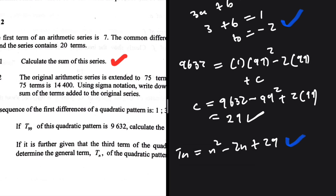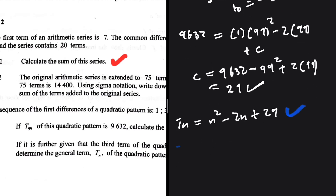We can verify by substituting n = 99: 99² − 2(99) + 29 = 9801 − 198 + 29 = 9632. That confirms t99 is correct, so our formula tn = n² − 2n + 29 is verified.